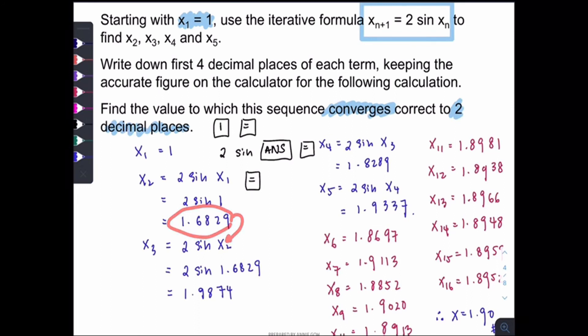So when you want to get the x4, you press another time equal sign. To get x5, equal again. To get x6, equal again. Until the answer converges to a fixed value, which is the root of the equation.